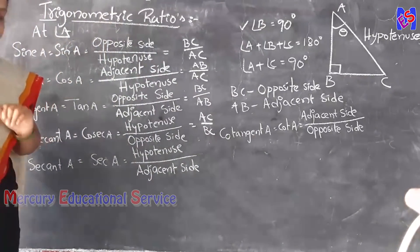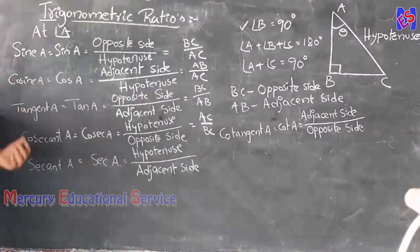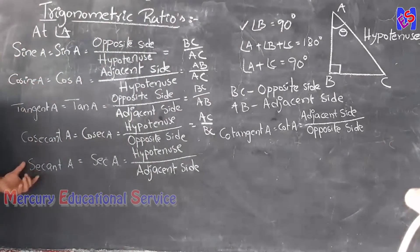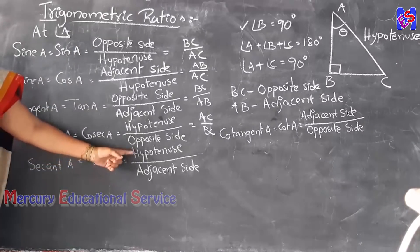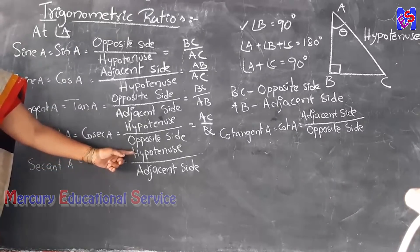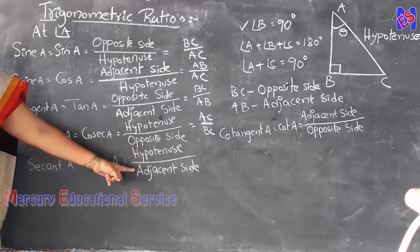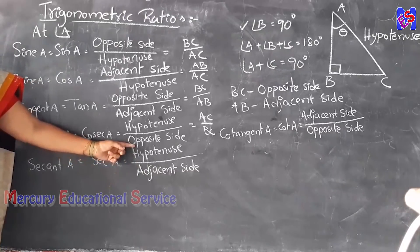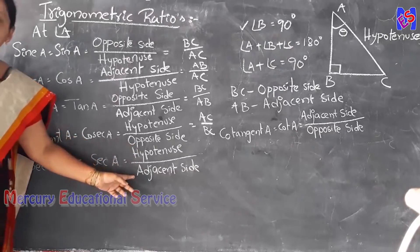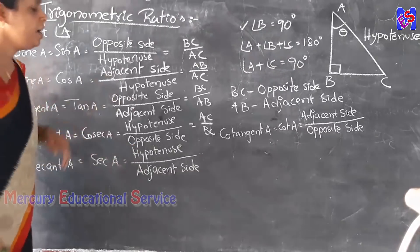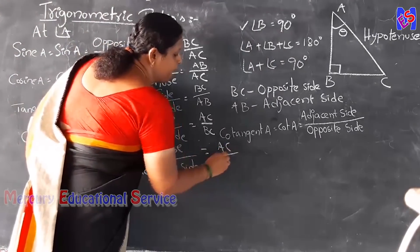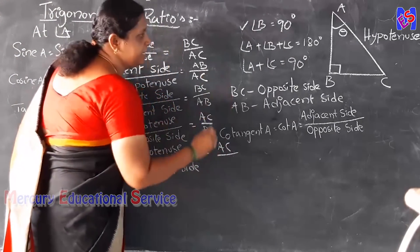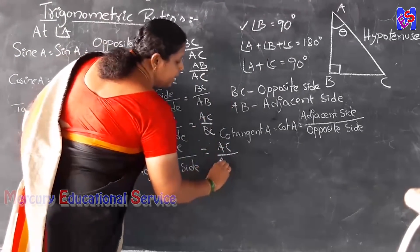Fifth ratio: secant A. The formula is hypotenuse divided by adjacent side. The hypotenuse is AC and the adjacent side is AB. So secant A equals AC by AB.